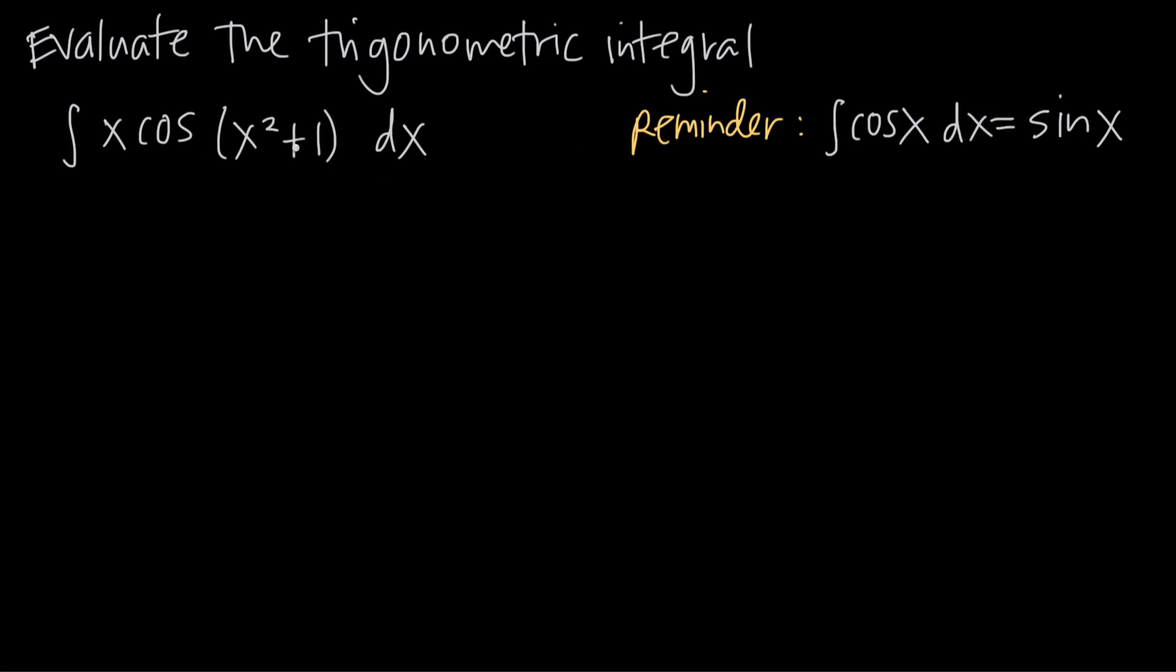So when we look at this integral, what we need to realize is that we're going to do a u substitution with u equal to x squared plus 1. If u is x squared plus 1, then du, the derivative of u, is going to be 2x. And of course, because we took the derivative of this with respect to x, we have to multiply here by dx. Now we want to solve for dx by dividing both sides by 2x. So we get du over 2x is equal to dx.